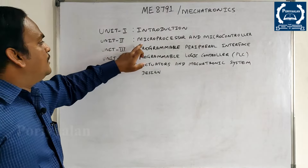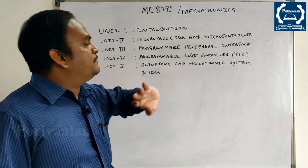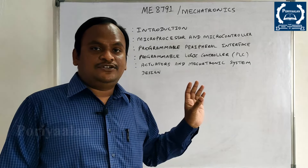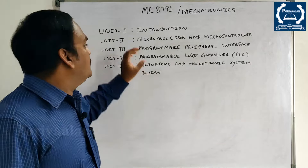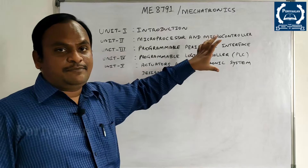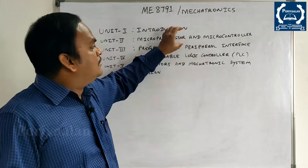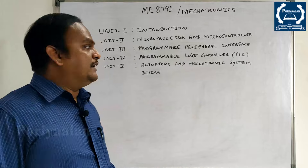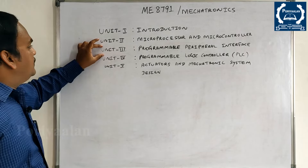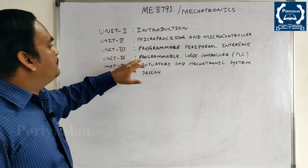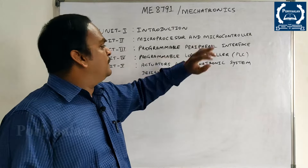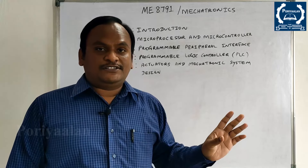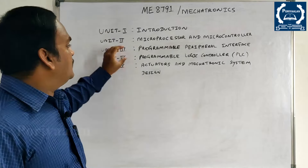In Unit 2, we cover Microprocessor and Microcontroller. The microprocessor covered is 8085 and its architecture. Unit 3 covers Programmable Peripheral Interface.